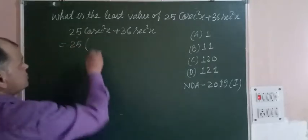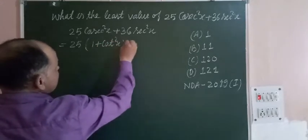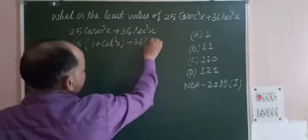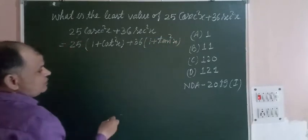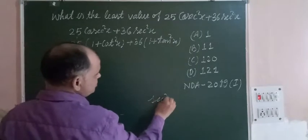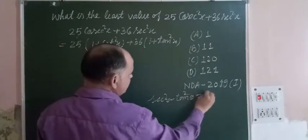We write 1 + cot²x in place of cosec²x and 1 + tan²x in place of sec²x, by using the concept that sec²θ - tan²θ = 1 and cosec²θ - cot²θ = 1.